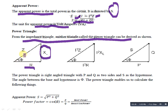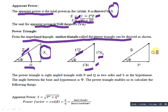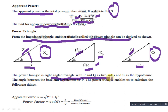Multiplying through by I squared gives I squared R, I squared XL, and I squared Z, which forms the power phasor diagram. In simple form, S equals P plus jQ, where jQ is on the y-axis, P is on the x-axis, and the resultant is S, the apparent power. The power triangle is a right-angle triangle with P and Q as the two sides, S as the hypotenuse, and phi as the angle between the base and hypotenuse.